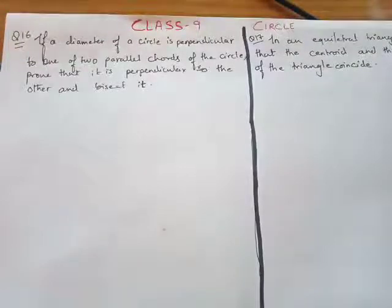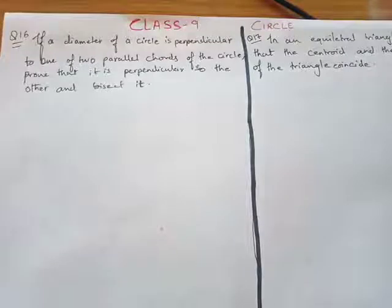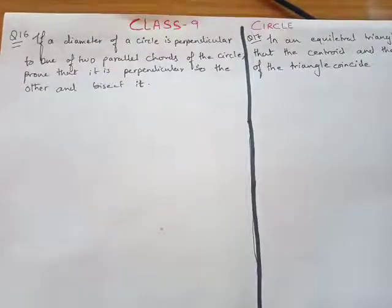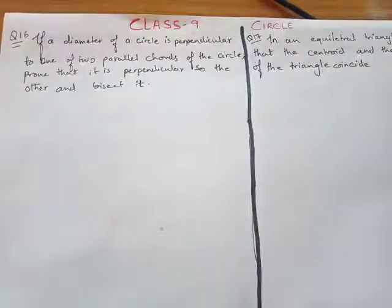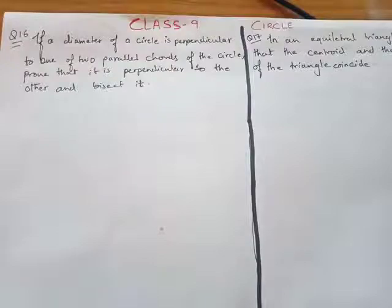Hello everyone, I hope everyone is doing well and studying these days. Today we'll be talking about a few more questions from exercise 15.1 about circles. We'll be looking at question number 16. It says: if a diameter of a circle is perpendicular to one of two parallel chords of the circle, prove that it is perpendicular to the other and bisects it.